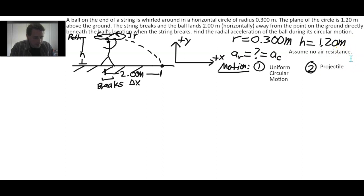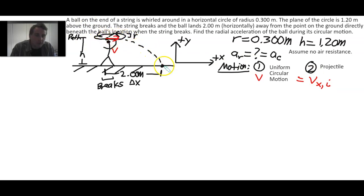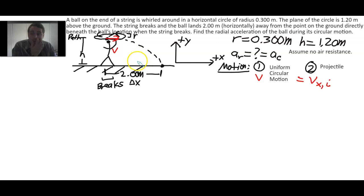The key link is that the velocity from the uniform circular motion equals the initial x-velocity of the projectile. Notice that the projectile launches off exactly horizontally. Because we know the height and the horizontal displacement, we should use the projectile equations first for no air resistance in a falling body, and see if we can figure out what this velocity V was.